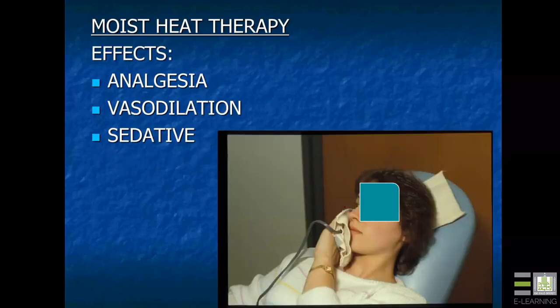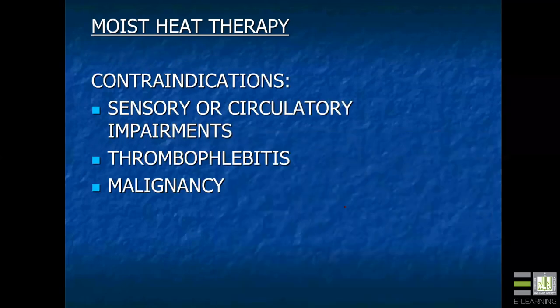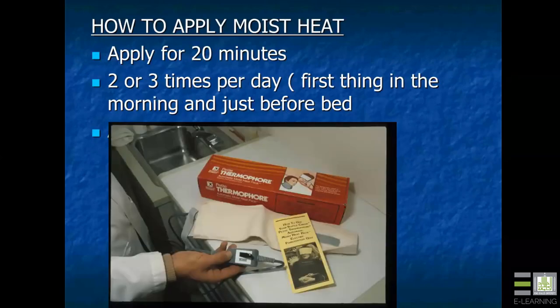Moist heat therapy effects include analgesia, vasodilation — which helps increase circulation and remove muscle toxins — and a sedative effect. There are contraindications: sensory or circulatory impairments, thrombophlebitis, or malignancy in the area. A commercially available thermophore is one application method — it draws moisture from the air, plugs into a standard outlet, and has an on/off switch that continues heating as long as depressed — like a dead man's switch.